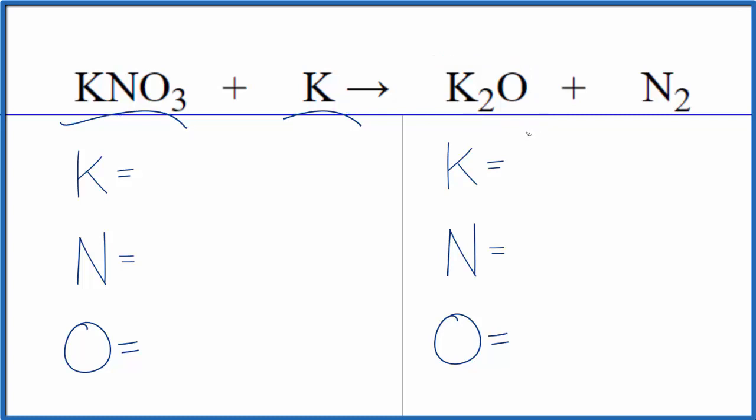To balance the equation, let's count the atoms up first. We have one potassium here and one here, so that gives us a total of two. One nitrogen and then three oxygen atoms.